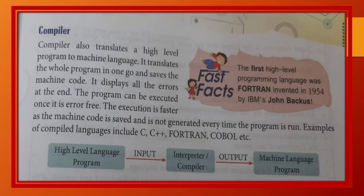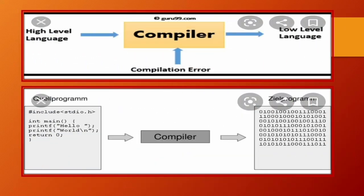Compiler. Compiler also translates a high-level language program to machine language. It translates the whole program in one go and saves the machine code. It displays all the errors at the end. The programs can be executed once it is error-free. Means compiler high-level language program ko machine language mein ek hi baar mein convert kar deta hai aur program ke last mein jo bhi mistakes hoti hai usse patata hai. The execution is faster as the machine code is saved and is not generated every time. The program is run. Examples of compiled languages include C, C++, Fortran, Cobol, etc.